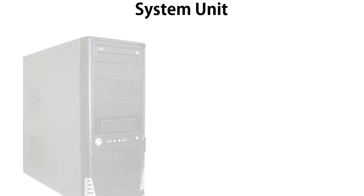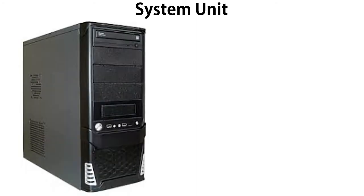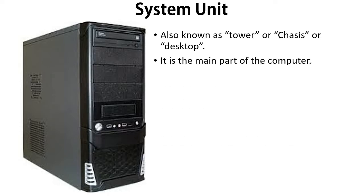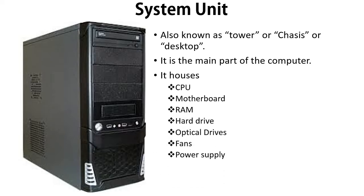First, system unit. This is an image of a system unit. It is also known as a tower, a chassis, or a computer desktop. It's the main part of the computer that houses many components — the CPU, the motherboard, the RAM, hard drives, optical drives, fan, power supply, and many more.